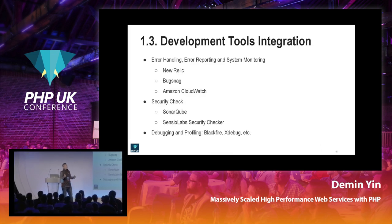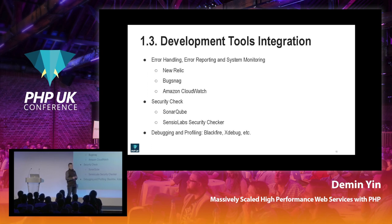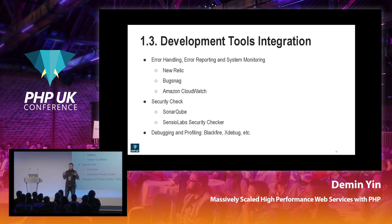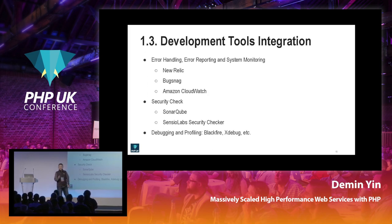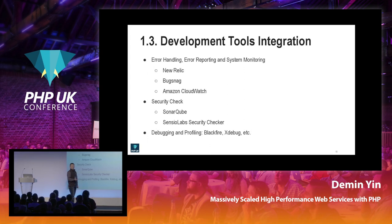We also use different PHP tools during development and deployment, with some integrated into our base images already. For error handling and reporting, we mainly use New Relic and Bugsnag — we find these two amazing. For security checks, we use Sonarqube and Sensiolabs Security Checker, which work on different parts of the codebase: Sonarqube checks coding issues in your own code, while the Sensiolabs checker identifies security vulnerabilities in third-party libraries used via Composer. For debugging and profiling, we mainly use Blackfire and Xdebug.